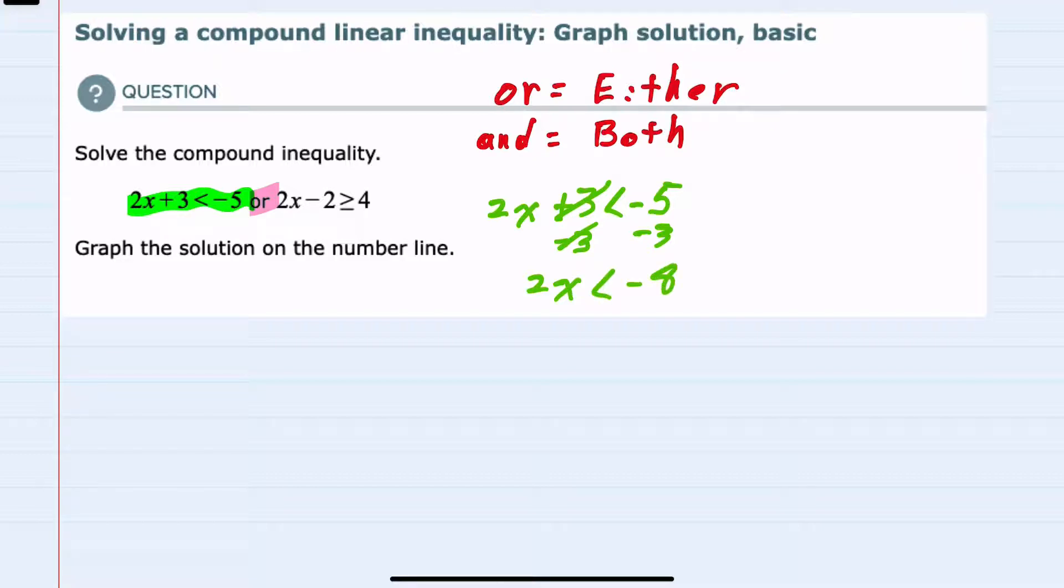And then to solve for the x, I would divide both sides by 2. Canceling on the left, I have x is less than negative 4. This is my simplified inequality on the left.